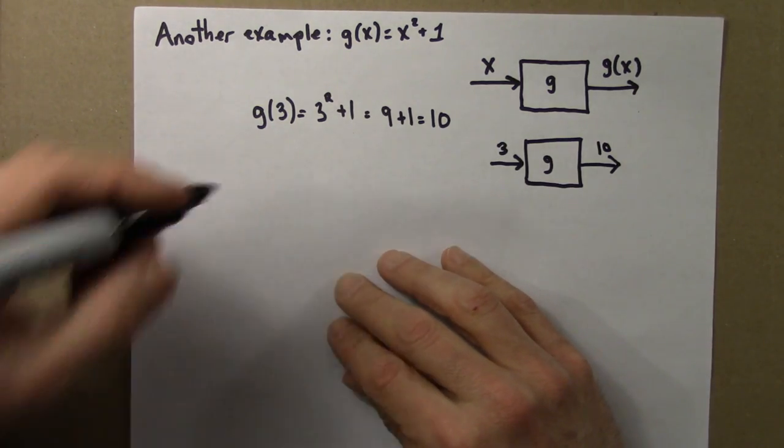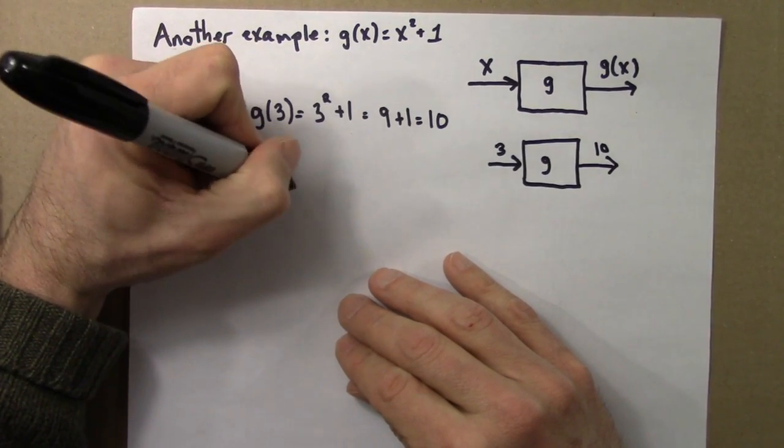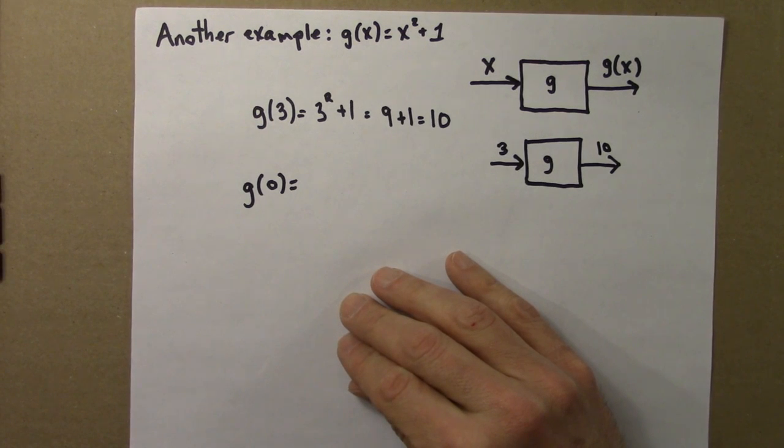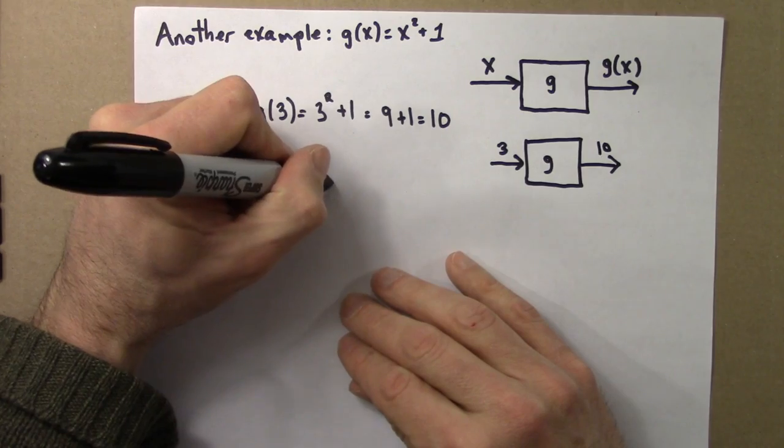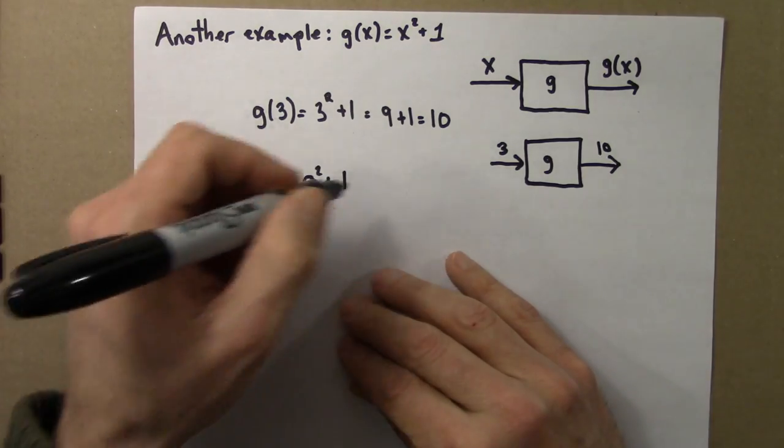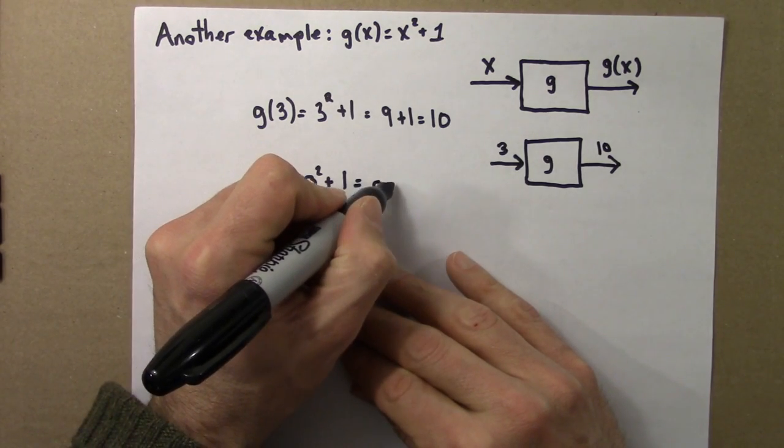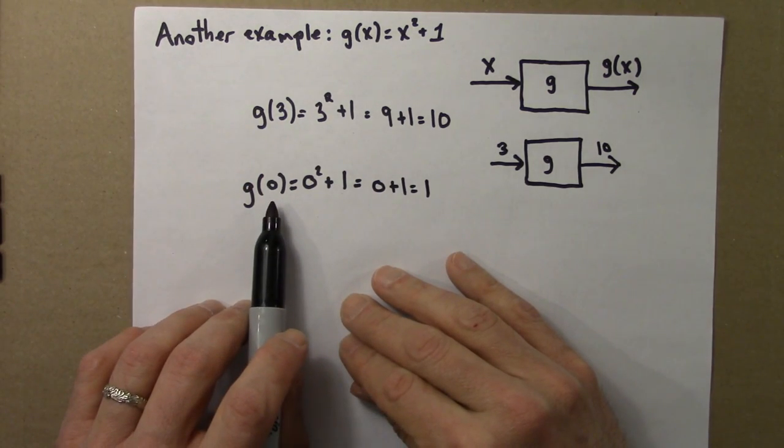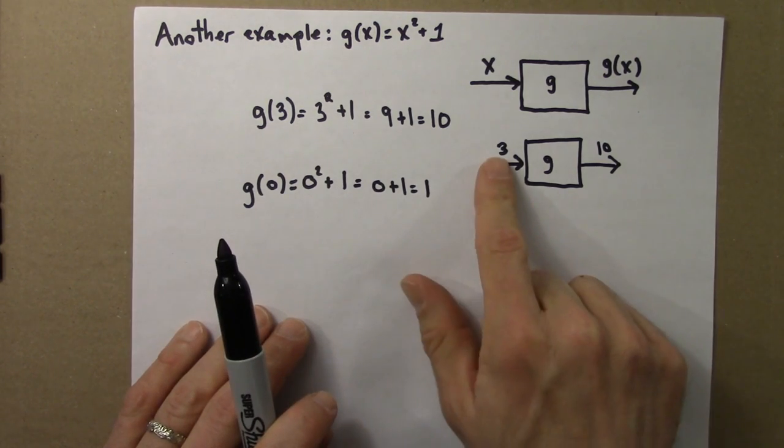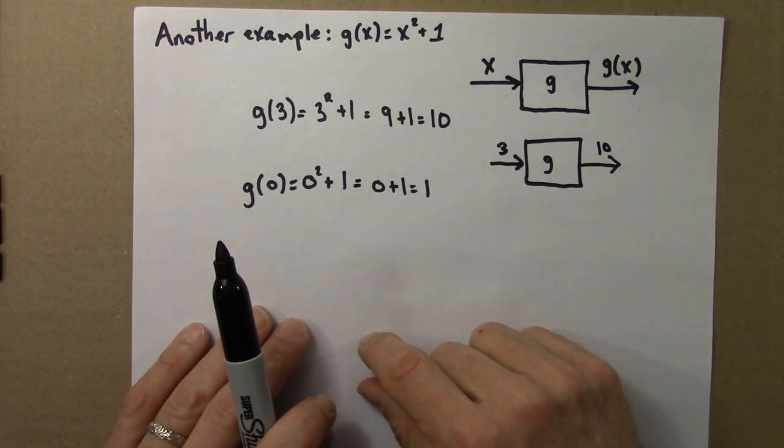Alright, let's do another example. Suppose our input is 0. So we start with 0 and then we do what the function tells us to do, to evaluate it. The function says square it and add 1. So we've got 0 squared and I add 1. And 0 squared, that's 0 times 0. 0 times 0, well that's still 0. So g of 0 is 1. We would have 0 coming in the box and 1 coming out the box.